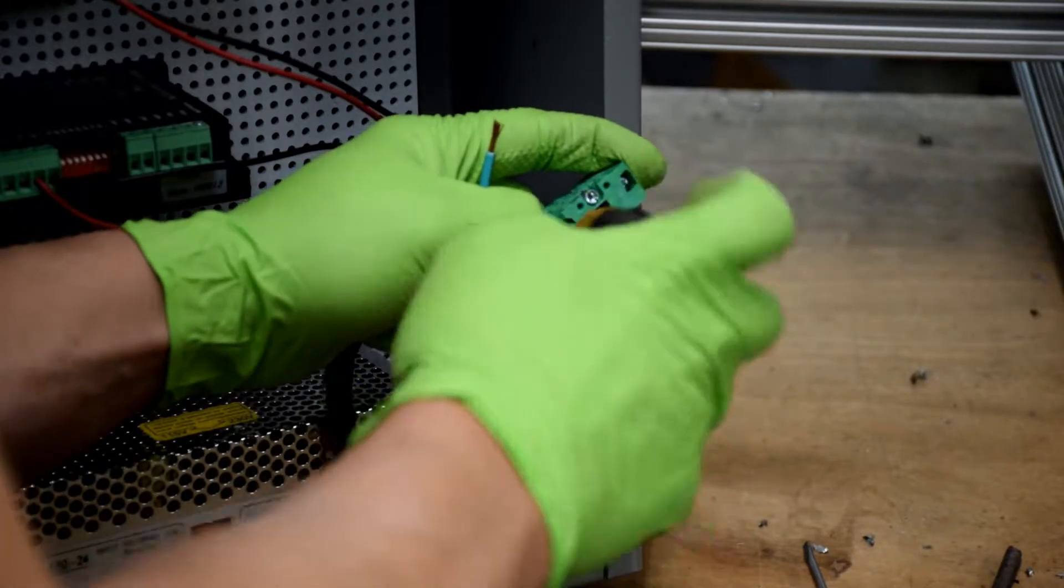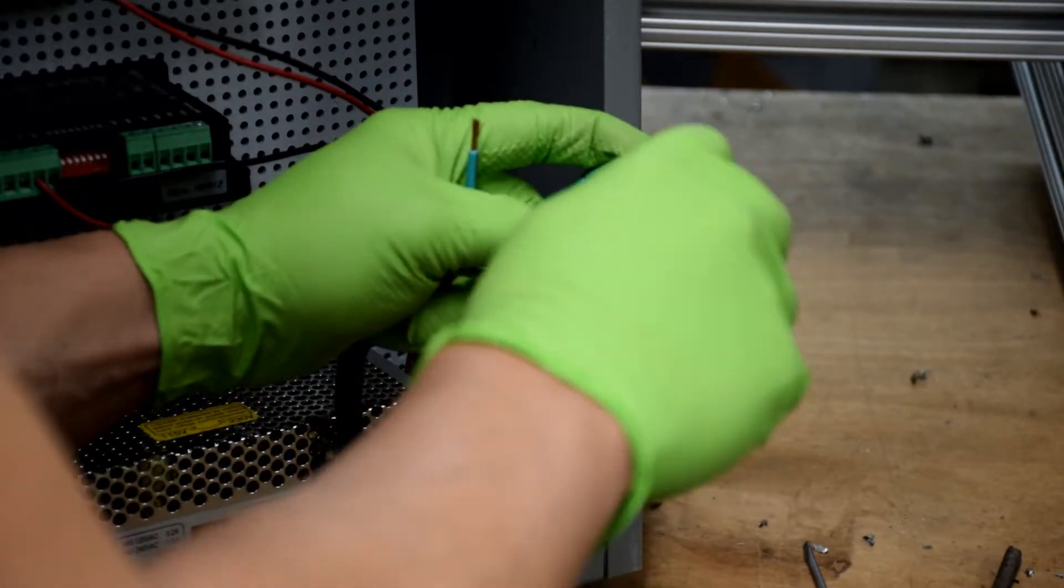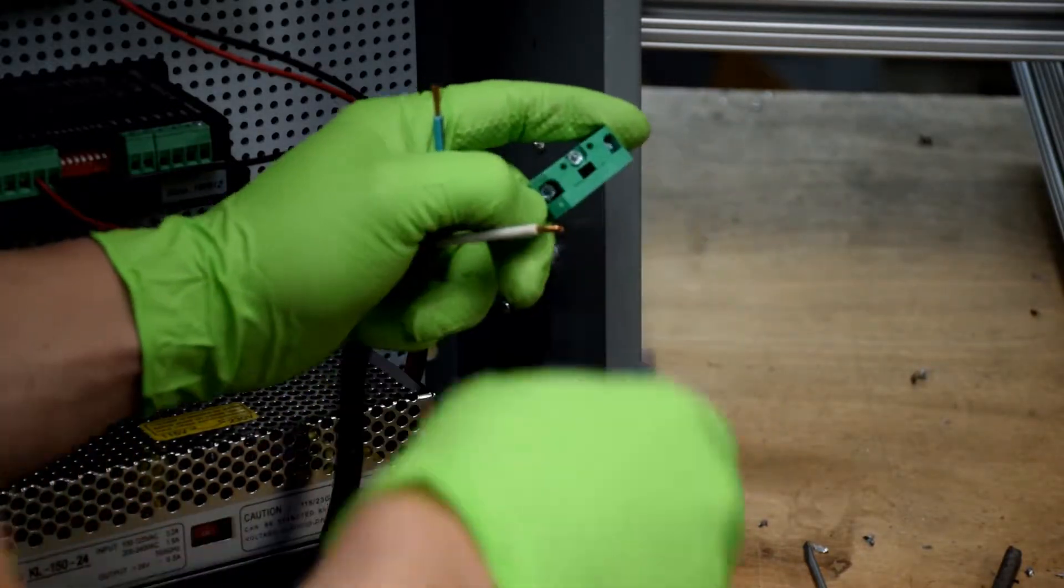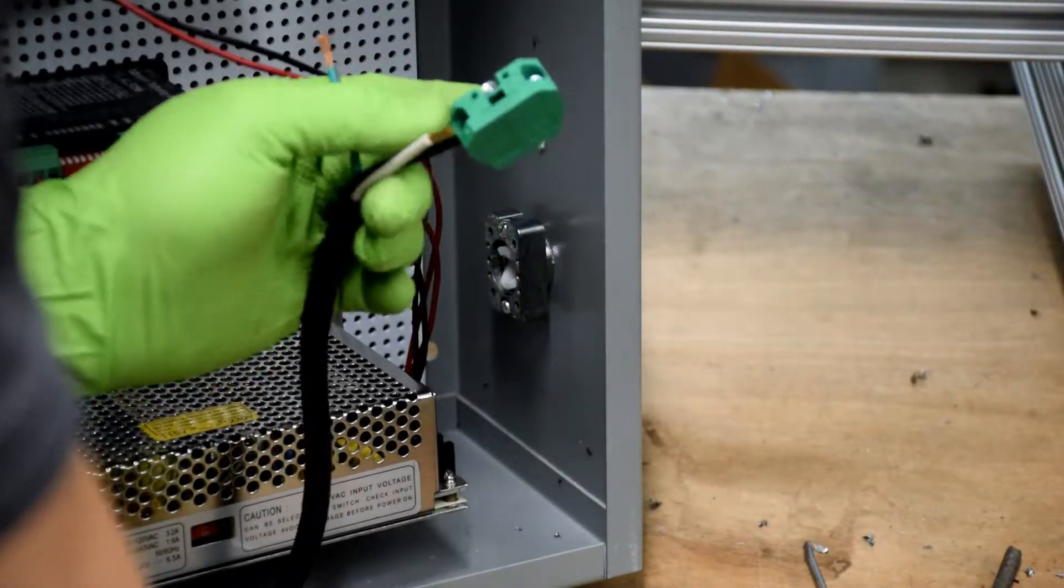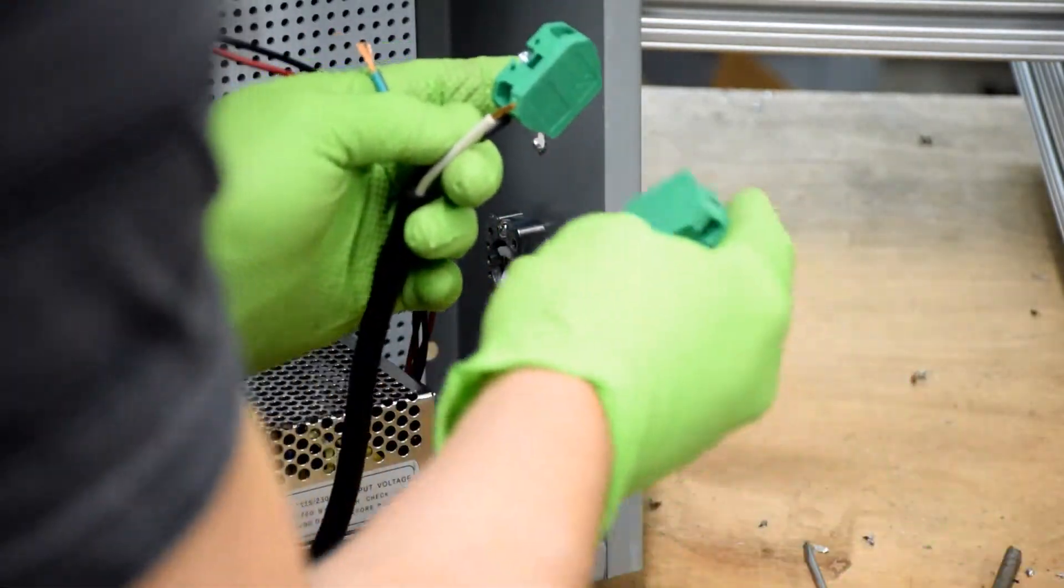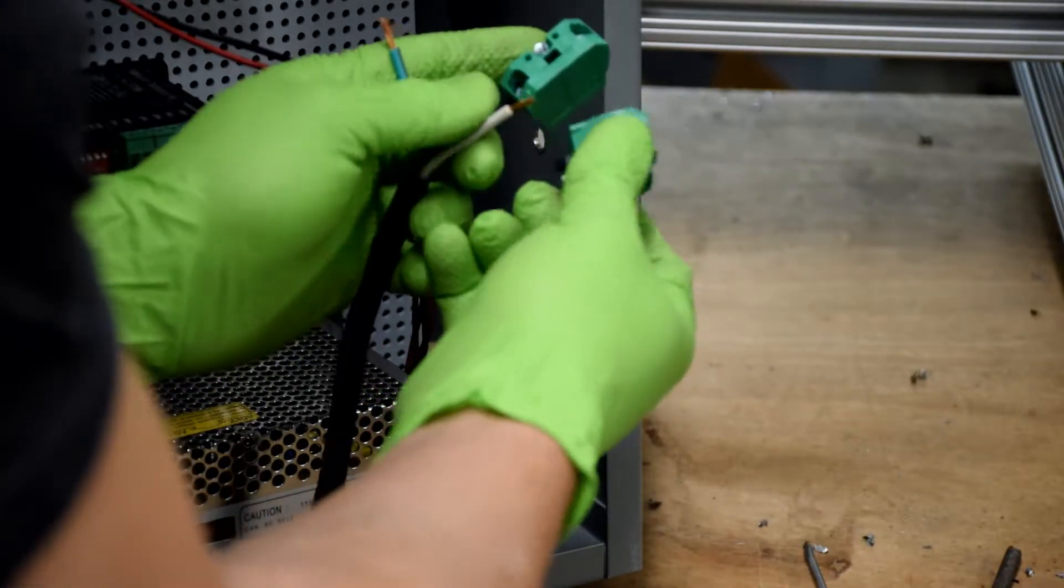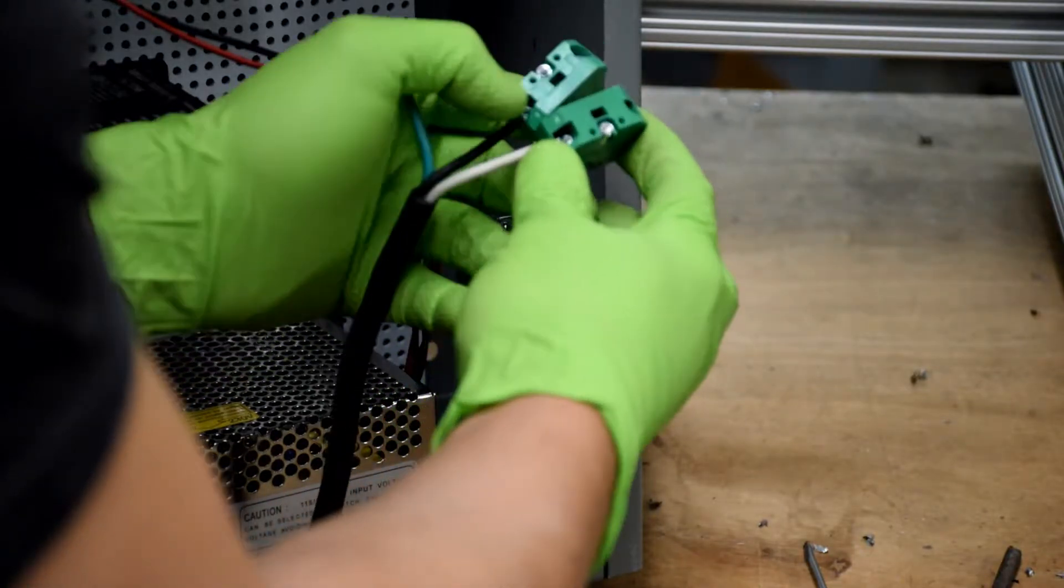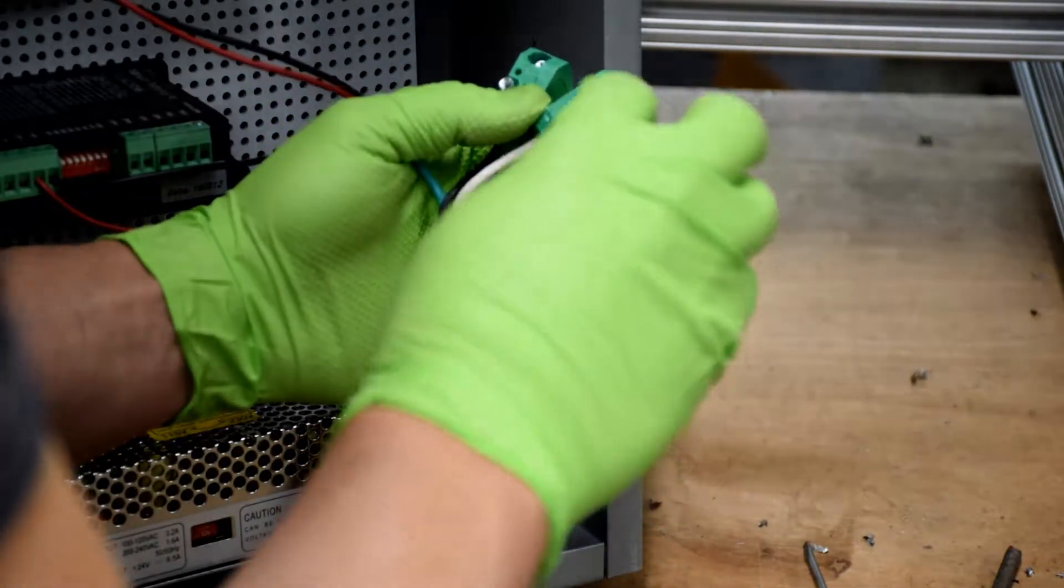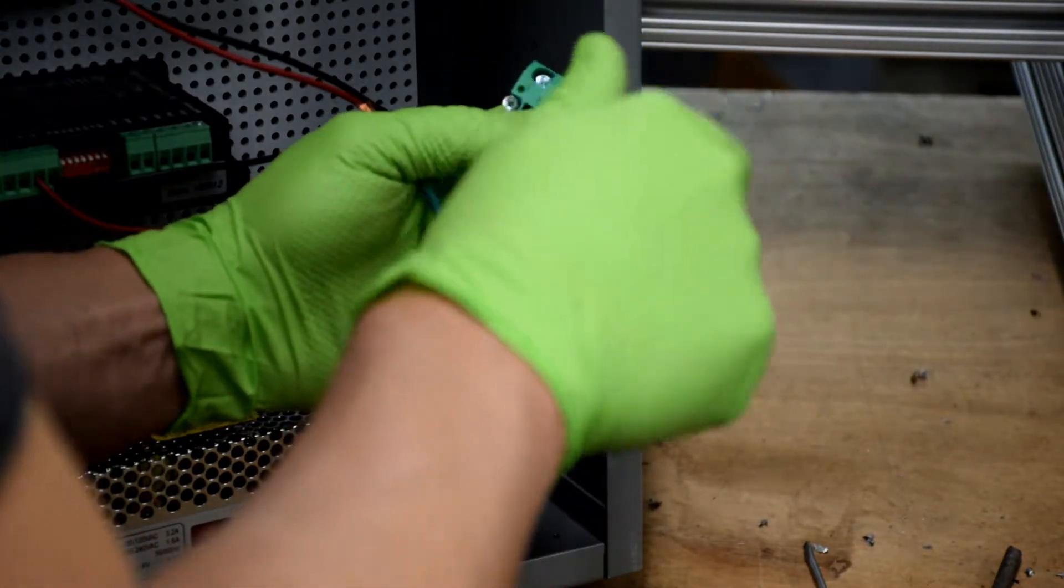Insert the black wire into one of the terminal blocks and tighten it down. So when you're putting these together, the terminal blocks are aligned so that the silver attachment screws are on the outside just like this.